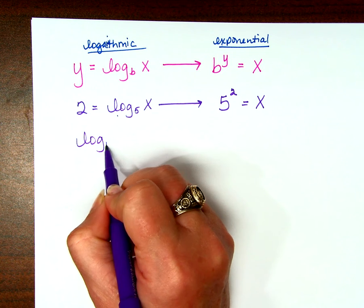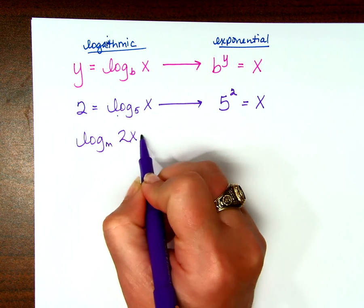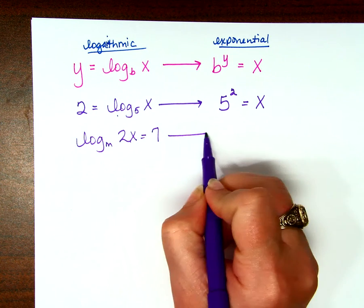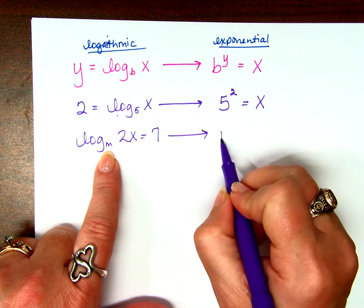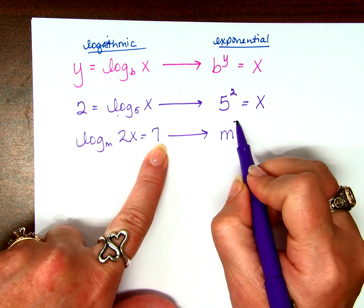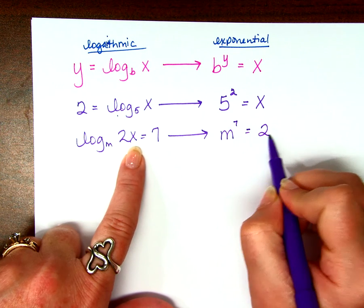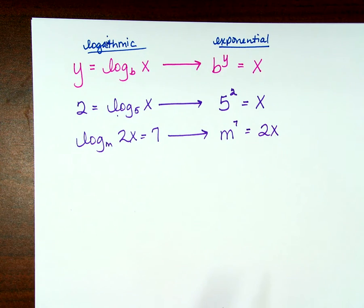Log base m of 2x equals 7. Can you write that in exponential form? The base, the answer equals the argument.